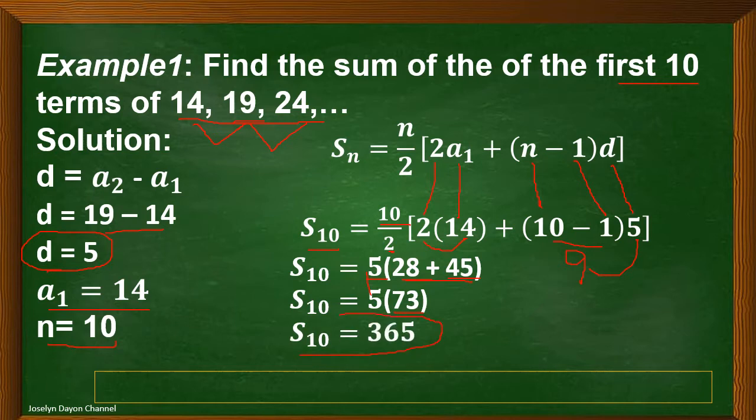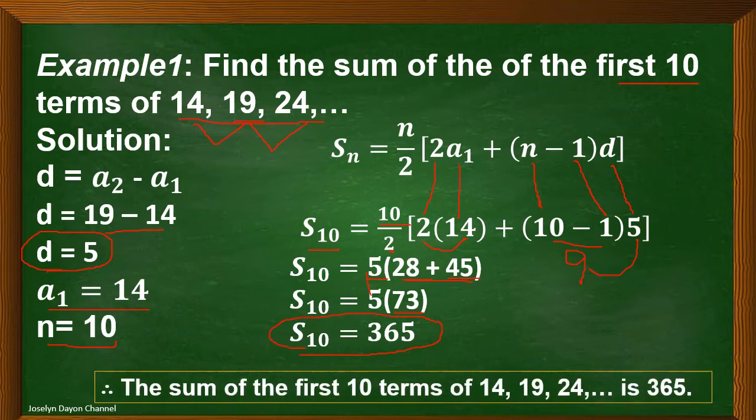So it means that the sum of the first 10 terms of 14, 19, 24, and so on is 365.